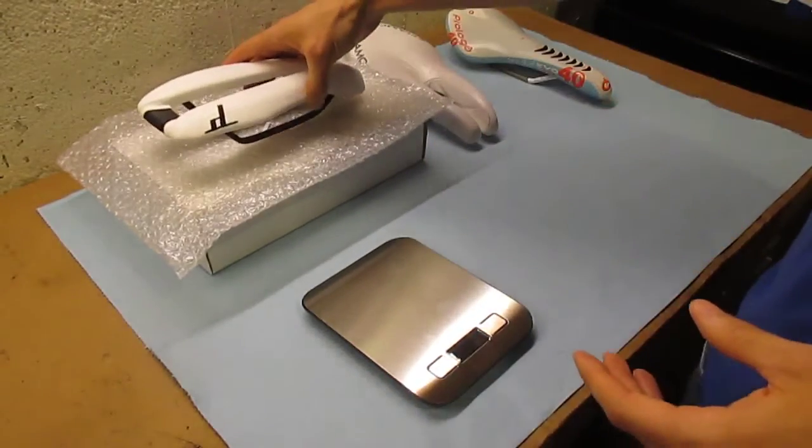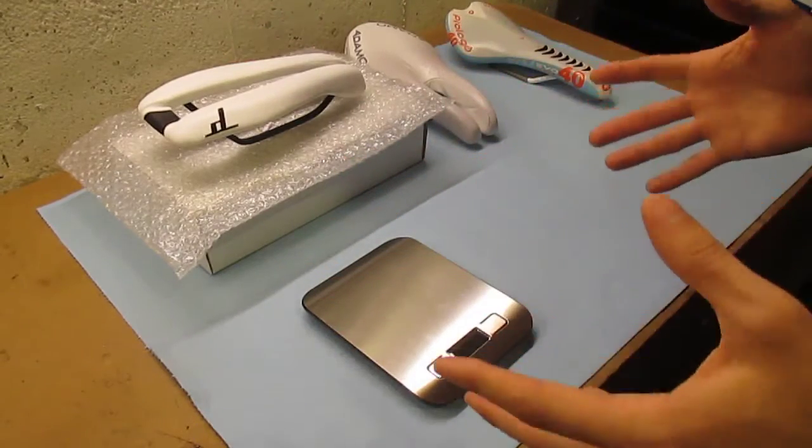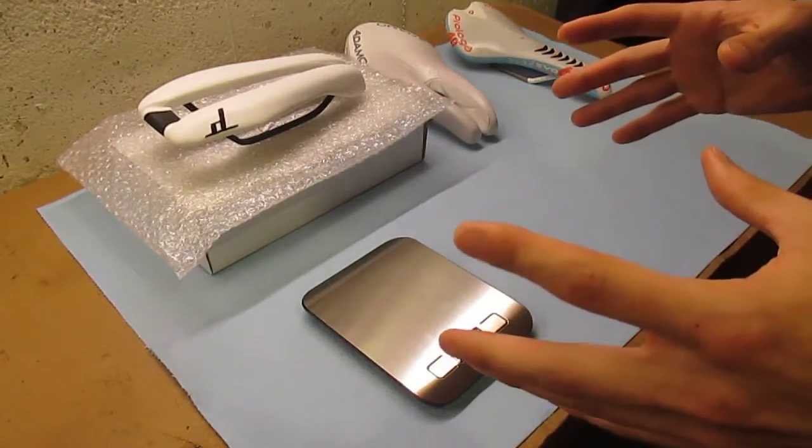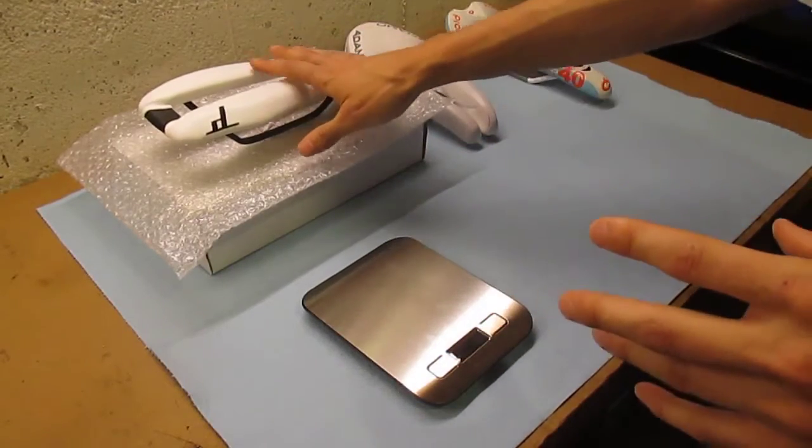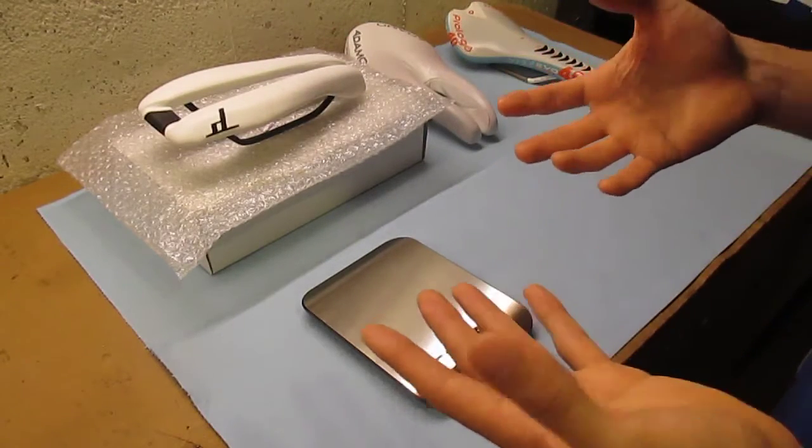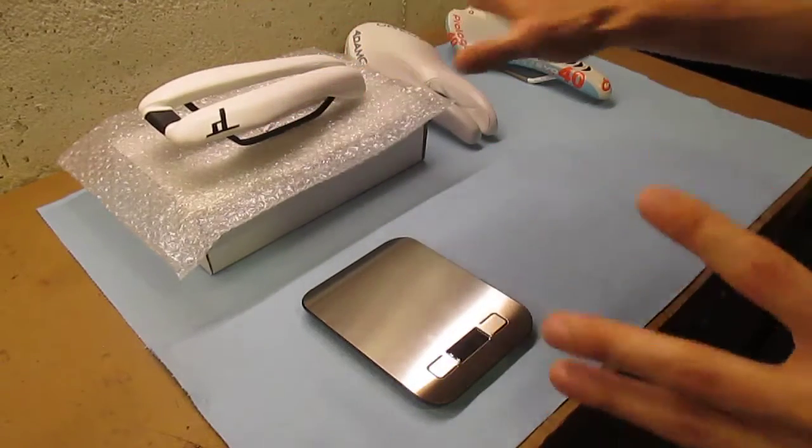From the time that I placed the order until the time that it arrived at my house was approximately two and a half weeks. About three days before I received the saddle, I received an email from Dash Cycles telling me that the item had shipped, and they also provided me with a tracking number.